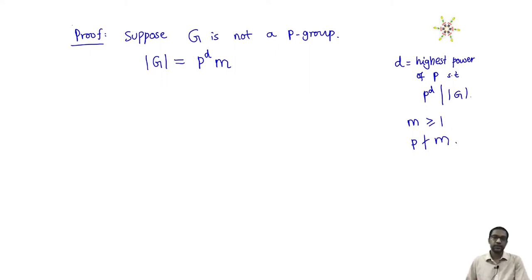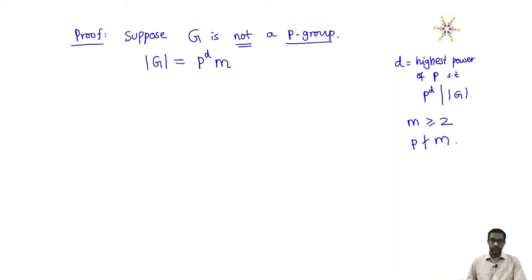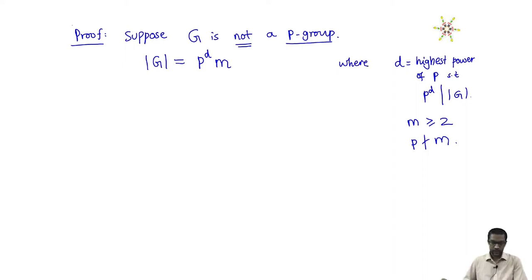Any number can always be written in this way, but I still have not incorporated the assumption that G is not a p-group. What does that mean? It says when I write |G| = p^d · m, the number m cannot be 1. If m is 1 then |G| = p^d, making G a p-group. So from the assumption that G is not a p-group, we conclude m is not 1 — m is at least 2.